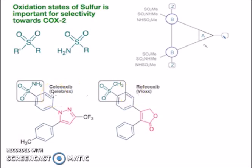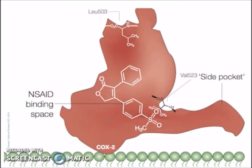And for celecoxib, we have the sulfonamide group. With rofecoxib as our example, the oxygen here will actually form a very strong hydrogen bonding with the side pocket of COX-2 enzyme. Since this structure is actually not available in COX-1 enzyme, this increases the selectivity of the drug towards COX-2.